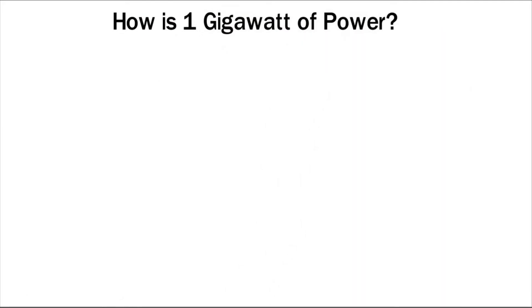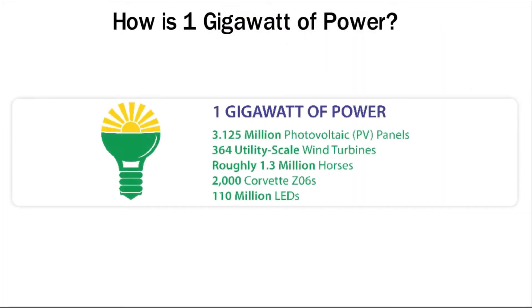How is one gigawatt of power? According to energy.gov, the following would generate one gigawatt of power: 3.125 million photovoltaic panels, 364 utility-scale wind turbines, roughly 1.3 million horses, 2,000 Corvette Z06s, 110 million LEDs.